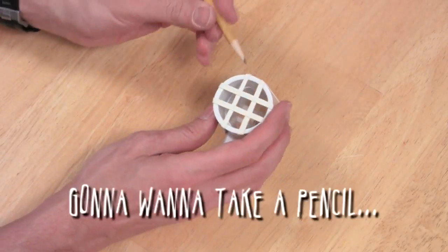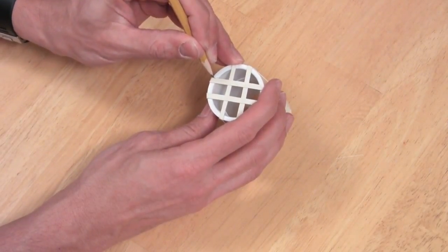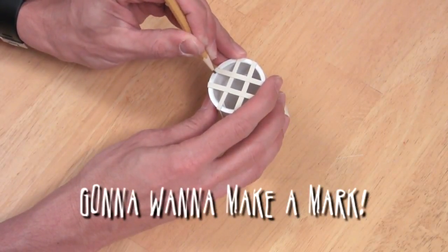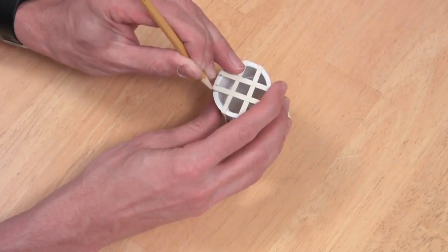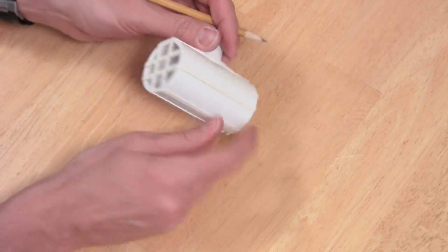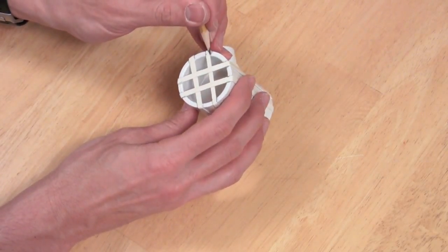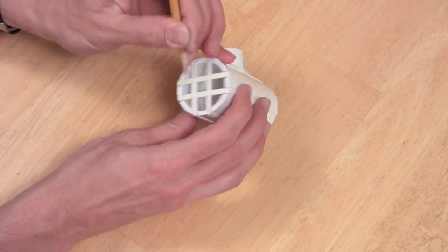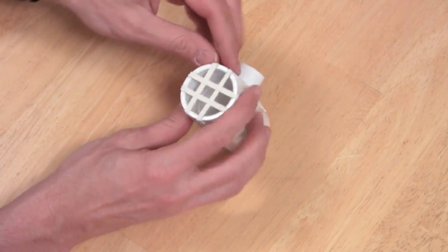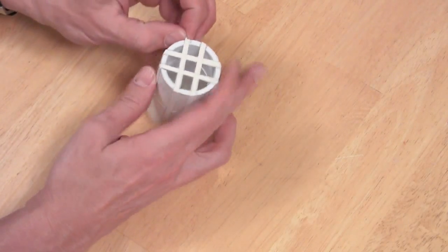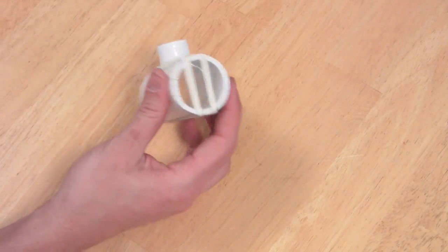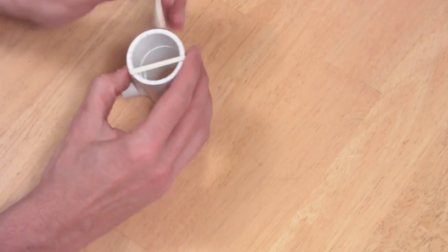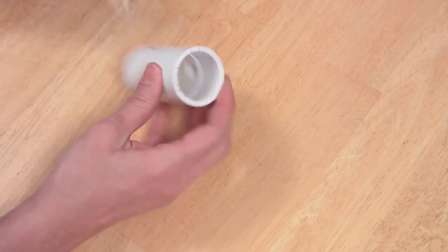So what you're going to do is take a pencil and you're going to want to make a mark where all the rubber bands are resting. When you're done, you'll have these marks which you will then be able to see when you take off the rubber bands. You'll have a guideline.